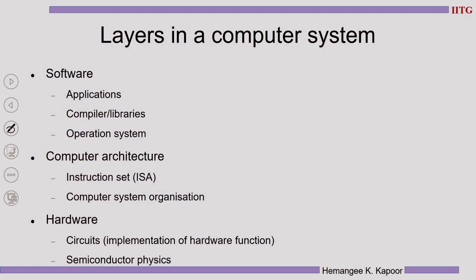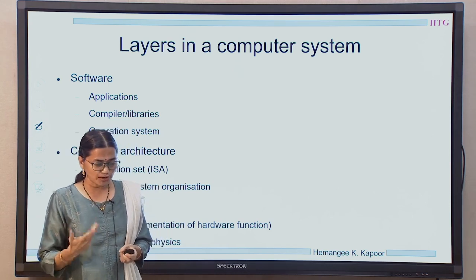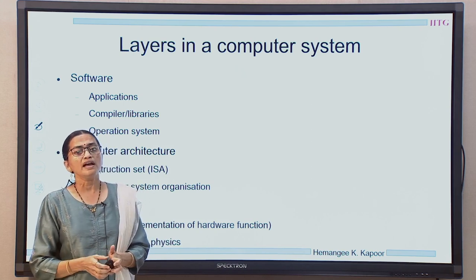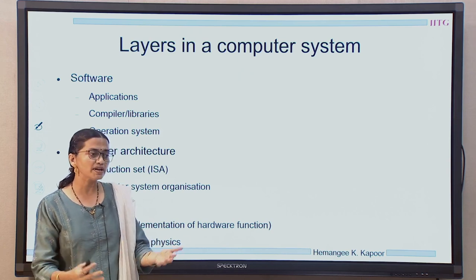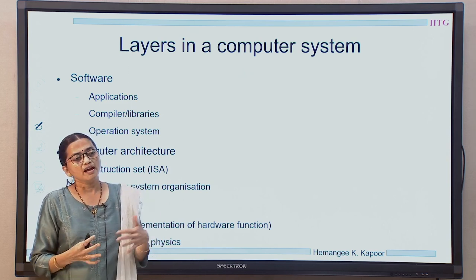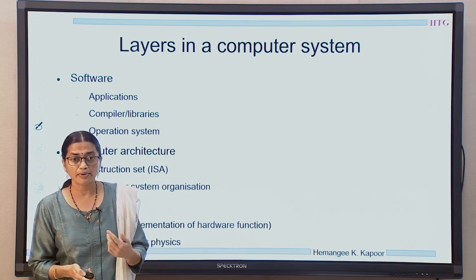Below the software layer is the architecture layer, where we concentrate primarily on the ISA because compilers translate high-level language to that understood by the ISA. Below the ISA is the computer system organization, which organizes the various modules comprising a complete computer system. The computer architect stands at the junction between the ISA and the operating system. The architect must understand the demands of the application, how the operating system requires support from hardware, and also what hardware the system will run on — including circuit implementations, circuit technologies, and semiconductor physics — so that efficient systems can be designed to enable better and faster software development.